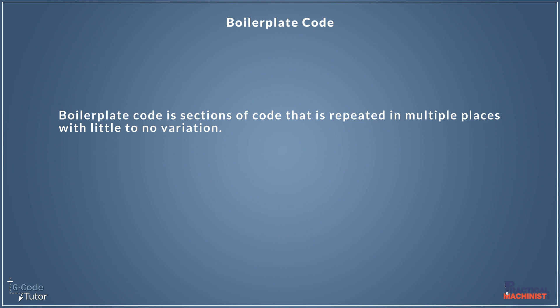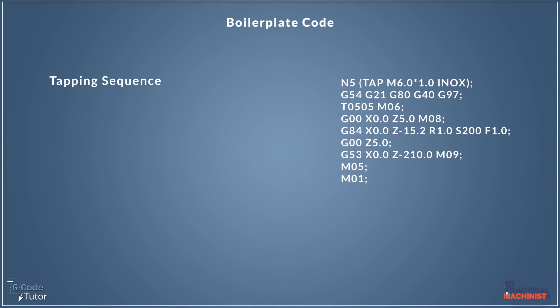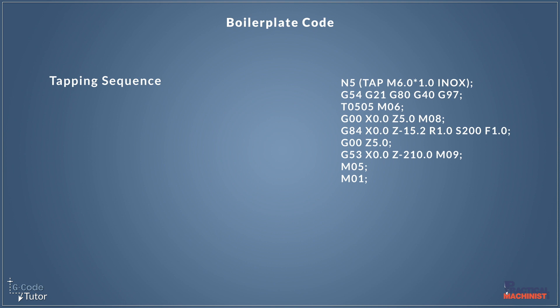So how can we use that when we're programming Gcode? Let's start off by taking a look at a basic tapping sequence that we would use on a CNC lathe. Here's an example program of what a tapping sequence may look like. Remember this may be different on your machine depending on the M codes and G codes that your machine uses. With this basic tapping sequence it would work for almost any part that we are tapping on the center line.